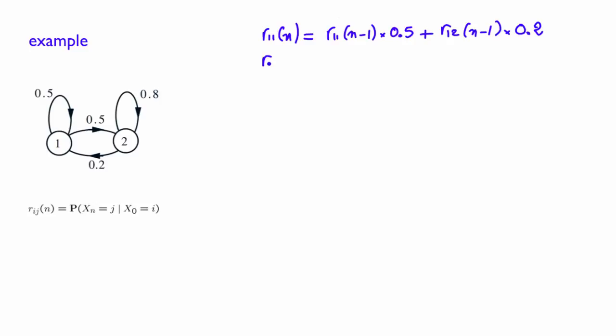Assuming that you start again in state 1, and you would like to calculate the probability that you end up in state 2 after n steps, you could apply the same logic. But these are probabilities. And given that you started in state 1, after n steps, you will either be in state 1 or in state 2. So r12 of n is simply 1 minus r11 of n.